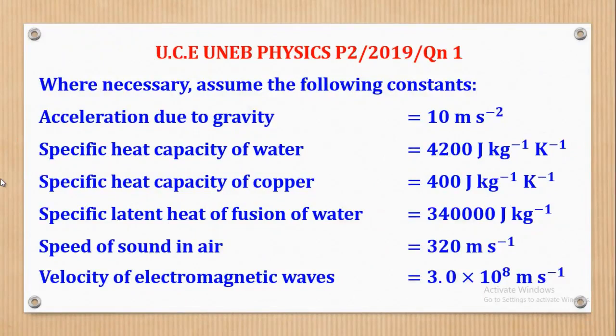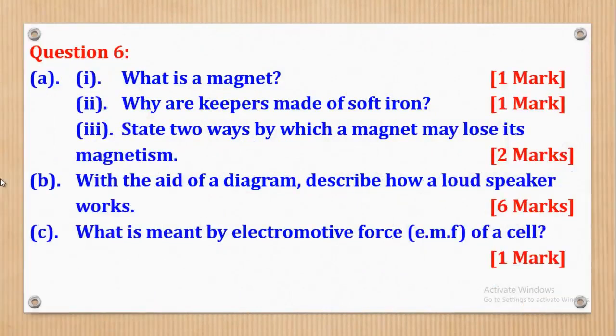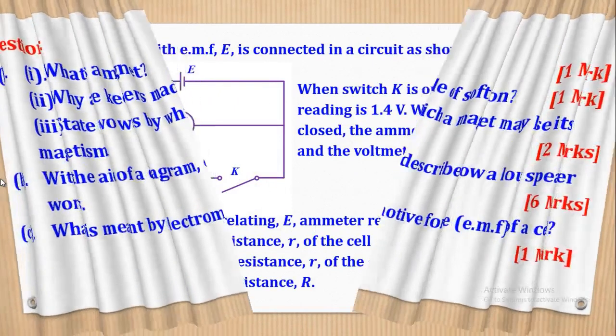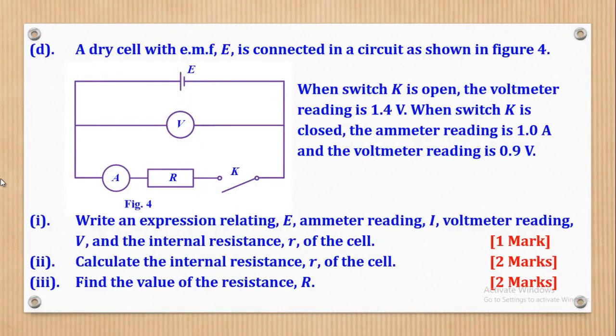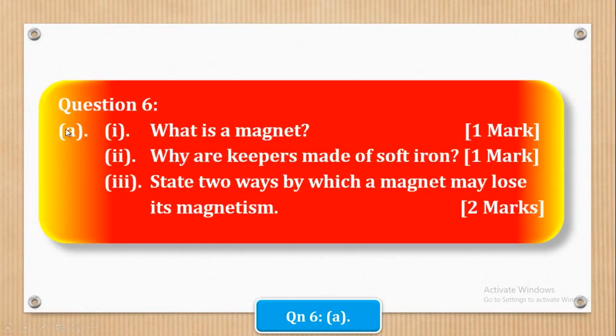So where necessary, these constants can be used. Now, these are the very questions I left in the previous video and I believe by now you have already tried them out and are ready to check your progress. So let's get started. We shall start with question 6, part A. Part A says, Roman 1, what is a magnet?